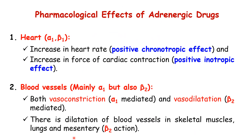The pharmacological effects of adrenergic drugs on different body systems, starting with the heart: they increase heart rate and the force of cardiac contraction. Heart rate is also known as chronotropy, so an increase in heart rate is a positive chronotropic effect. The increase in the force of cardiac contraction is called inotropy; a positive inotropic effect means increased force of contraction. Beta-1 agonists and alpha-1 agonists both increase heart rate and cardiac contraction.